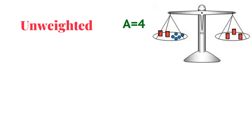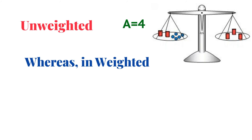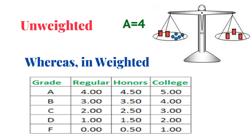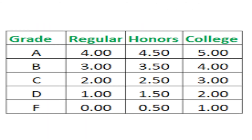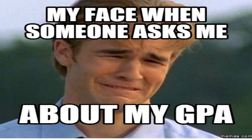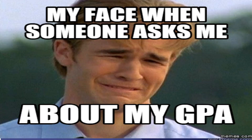In the case of weighted GPA, the grade points for an A depend on whether it is assigned for a regular level class or an honors class. For instance, an A in a regular level class might be equal to 4.0, whereas the same A in an honors class will be equal to 4.5. As they say, pain is temporary but GPA is forever.